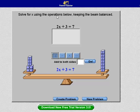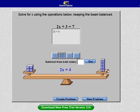Solve for x using the operations below. I can add to both sides, subtract, multiply, or divide. I think I'm going to subtract 3 from both sides. And hit Go. It takes away 3 there, and it takes away 3 there.